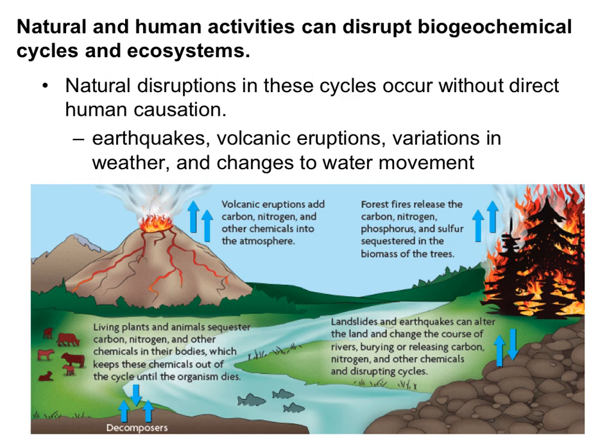Natural disruptions occur in these cycles and are not caused by humans. Things like earthquakes, volcanic disruptions, variations in weather, and changes to water movement can all affect these cycles. Volcanic eruptions and forest fires release a lot of carbon and nitrogen into the atmosphere. Decomposers, landslides, and other events can alter the earth and change the course of rivers, burying or releasing carbon, nitrogen, and other chemicals.